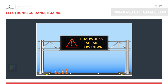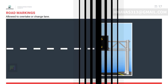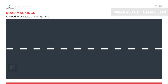Electronic guidance boards are newly introduced signs that warn road users about the latest updates related to weather, traffic jams, and road works ahead. Road markings are used to indicate where you are allowed to overtake or change lanes.